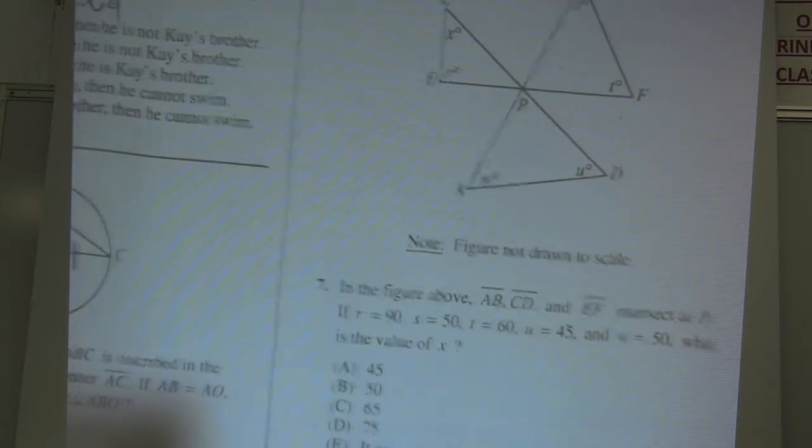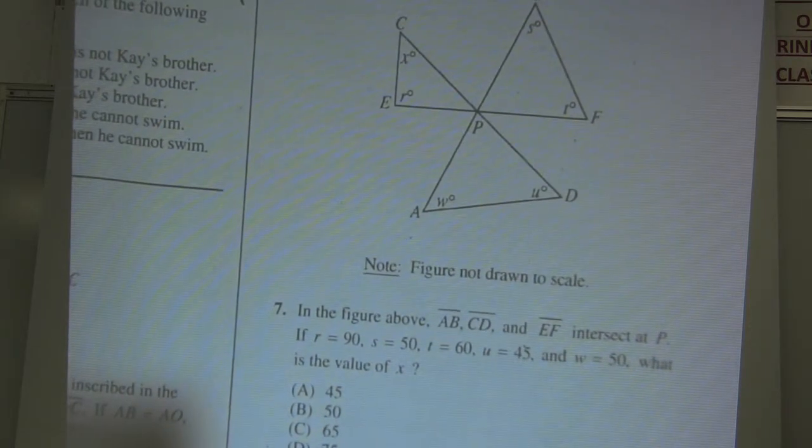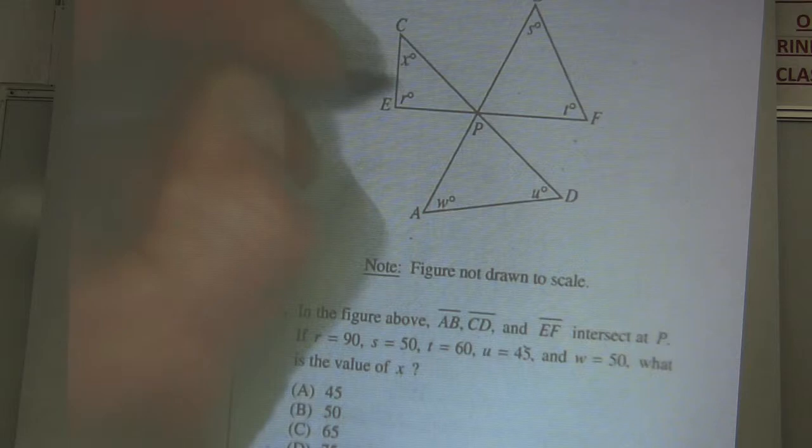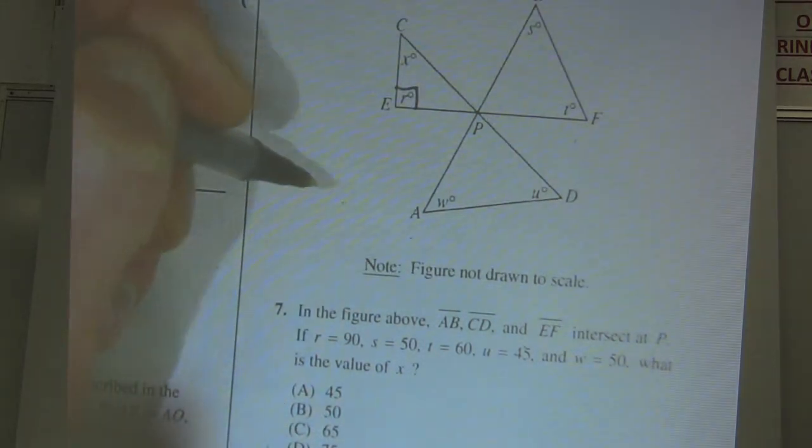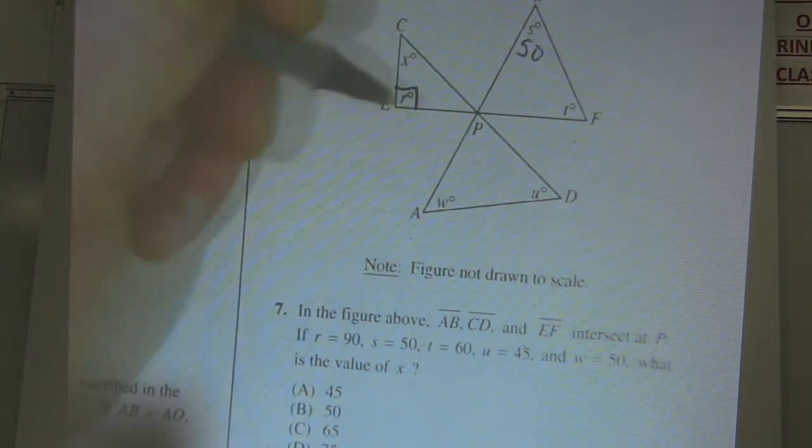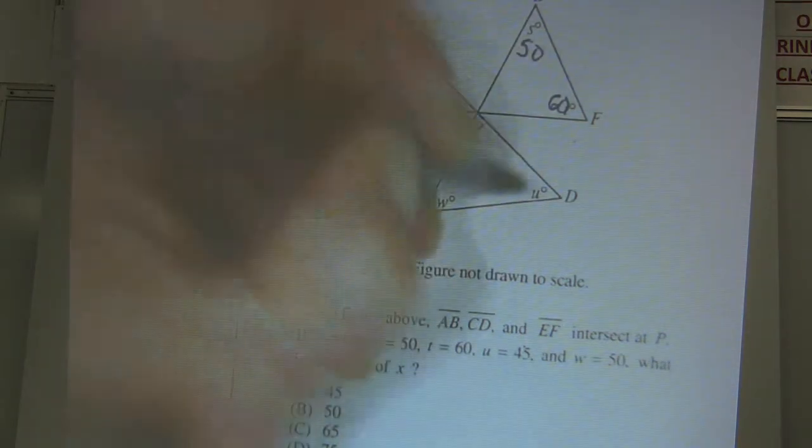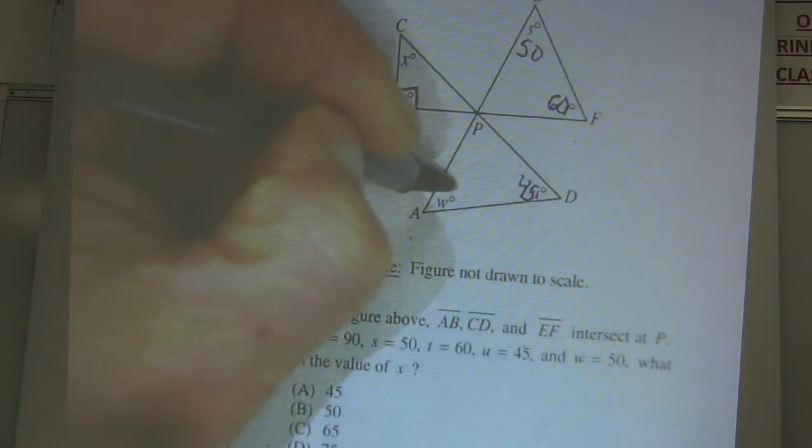It says in the figure above, the segments AB, CD, and EF all intersect at P. We got some angle measures: 90, so I'm going to put a right angle right there, 90 degrees. R equals 90. S equals 50, so this is 50 right here. T equals 60, U equals 45 down here, W equals 50.